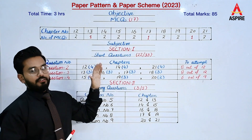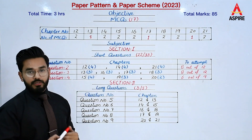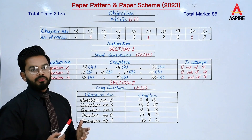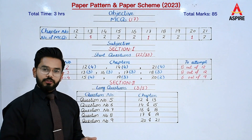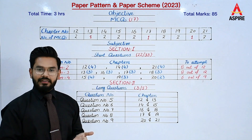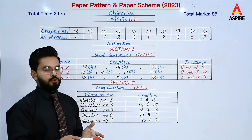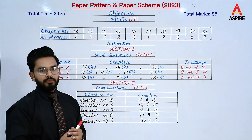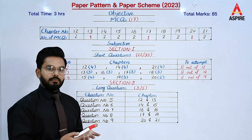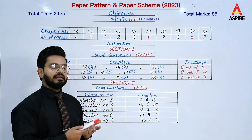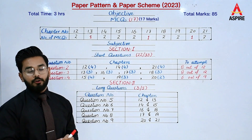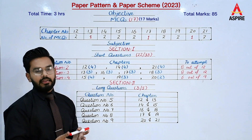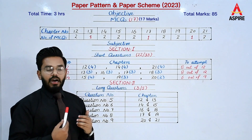Our first question, question number 1, is an objective question. In our objective question, we have multiple choice questions — total 17 MCQs, one mark each. So students, the total marks will be 17, and you have 20 minutes for these 17 MCQs.